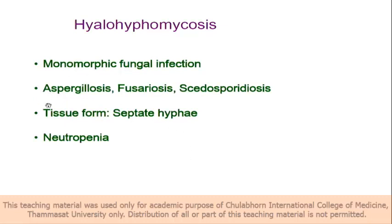Not only aspergillus — fusarium and scedosporium also cause hyalohyphomycosis or systemic mycosis. The tissue form for yeast will be budding yeast; for thermally dimorphic fungi, intracellular budding or fission yeast. For monomorphic molds, the tissue form will be septate hyphae or non-septate hyphae, depending on the pathogen.